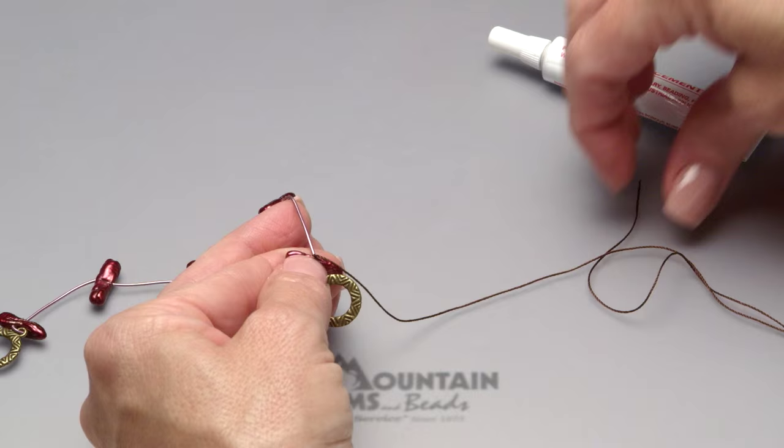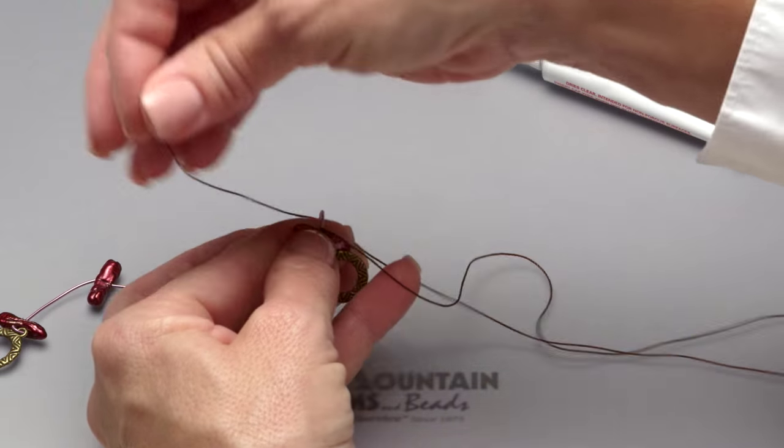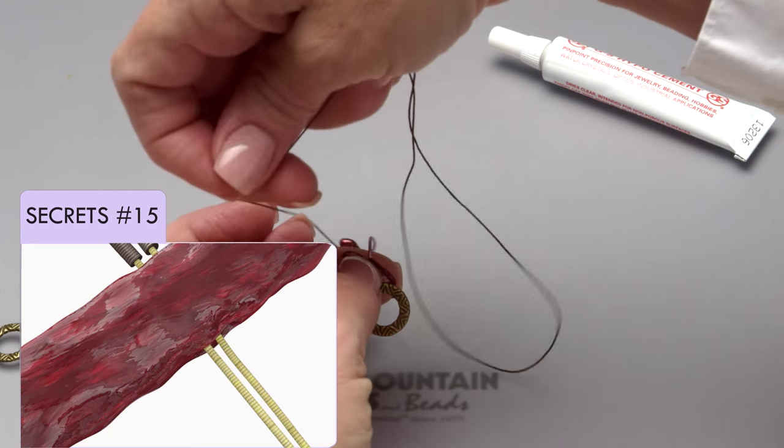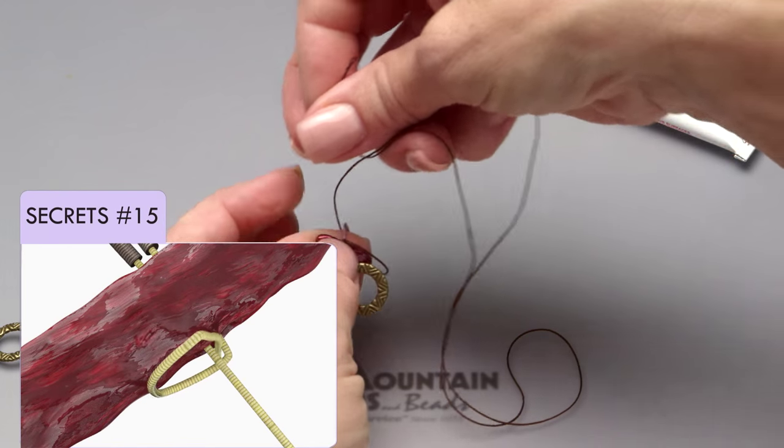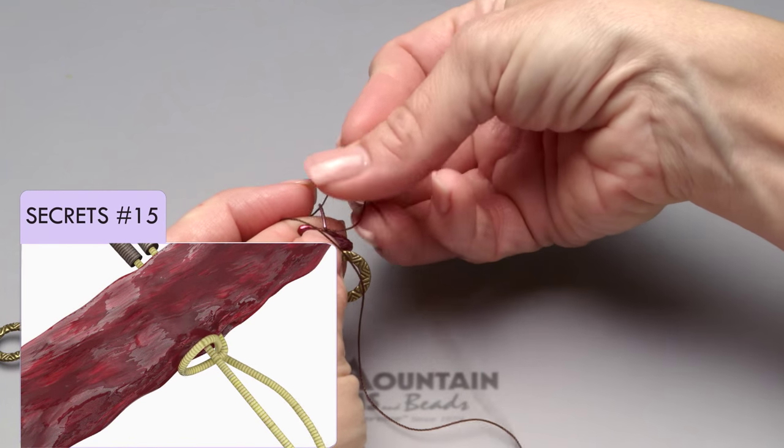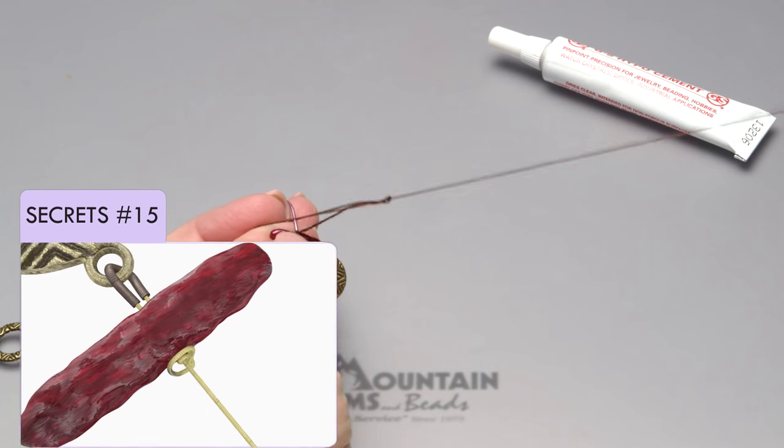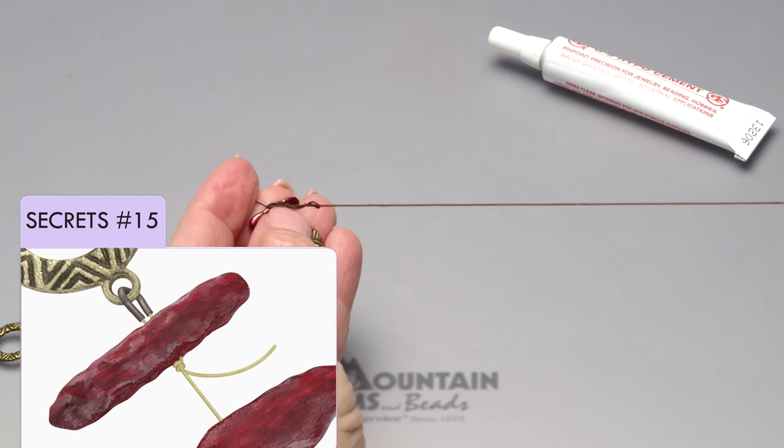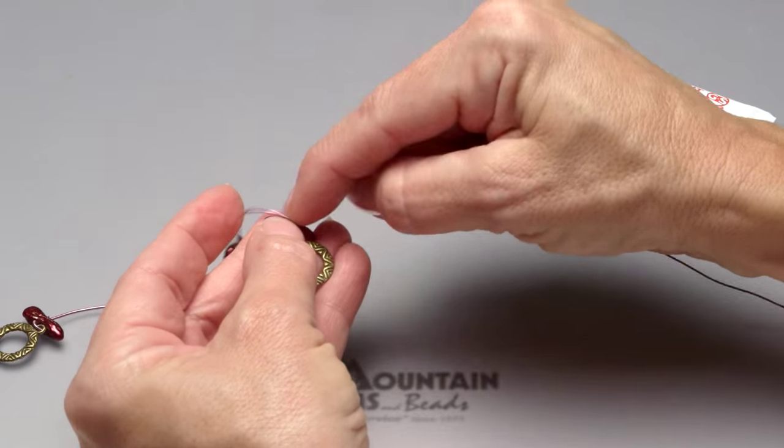Repeat, form another half hitch knot. Have both knots land on top of each other for extra security there.